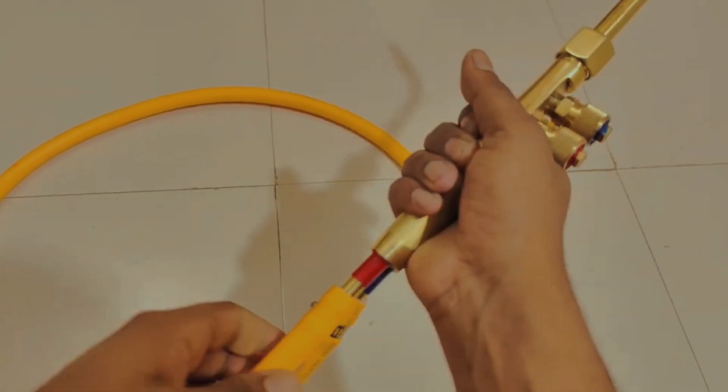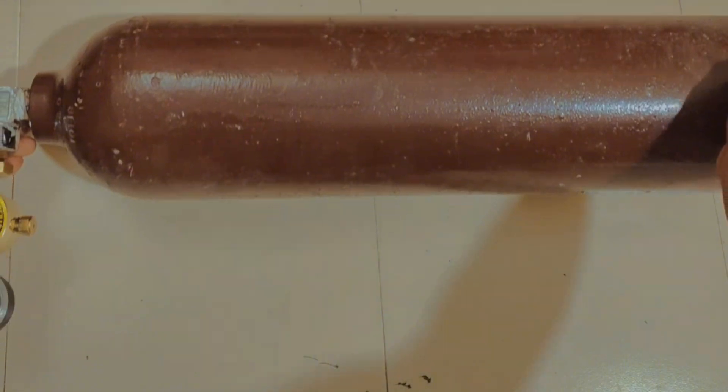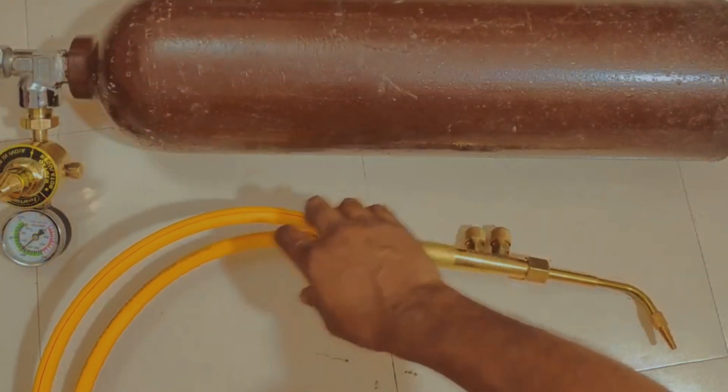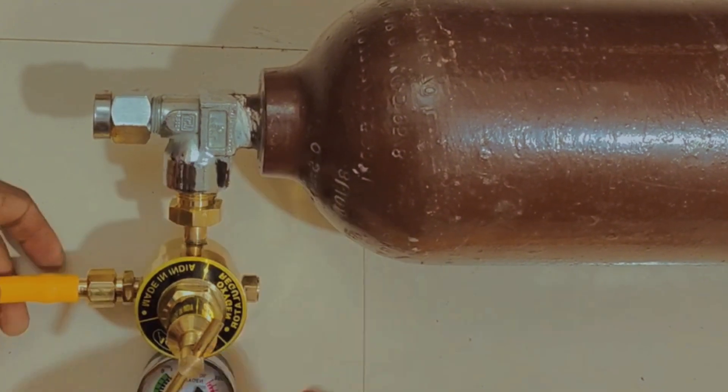A propane torch is a device that produces a flame by burning propane gas. You can find propane torches in hardware stores or online, and they are often used for soldering, brazing, or heating.